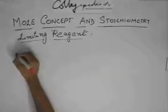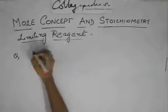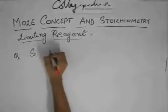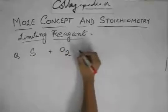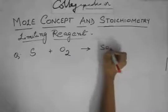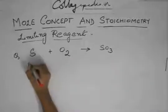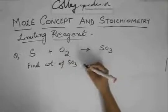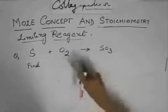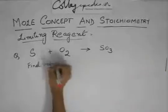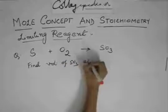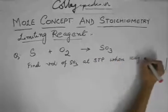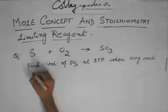Some more problems from limiting reagent. Let's say sulfur burns in oxygen to produce SO3 gas. Find the volume of SO3 at STP when 100 gram each is taken.